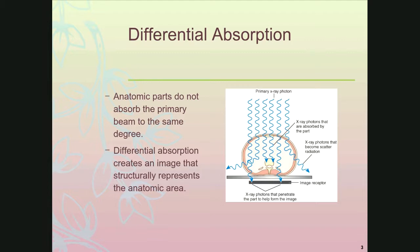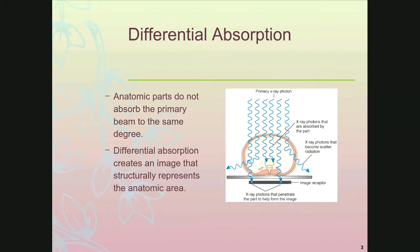The first thing they talk about is differential absorption. Differential absorption tells us that different anatomy doesn't absorb the primary beam to the same degree. By this process, you get an image that structurally represents the anatomic area you pass through — more radiopaque objects like bone or contrast media tend to absorb the photons, while more radiolucent areas tend to allow photons to pass through unaffected. Where you get absorption, that gives you the white or light clear areas on your image receptor; where it passes through unaffected gives you the darker shades, and it's a combination of those that creates the x-ray image.